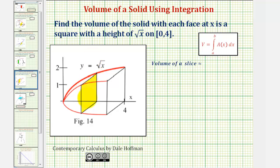So because the face or the cross section is a square, we'll be using the area formula for a square, where the area is equal to s squared, where s is the length of one side. So looking at our square, notice both this length and this length would be square root x.